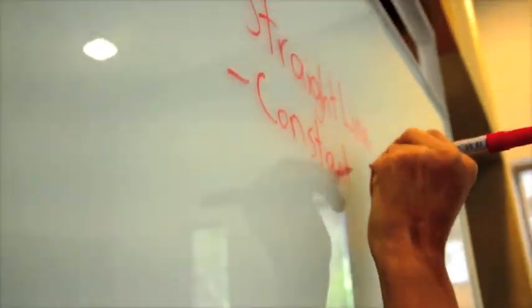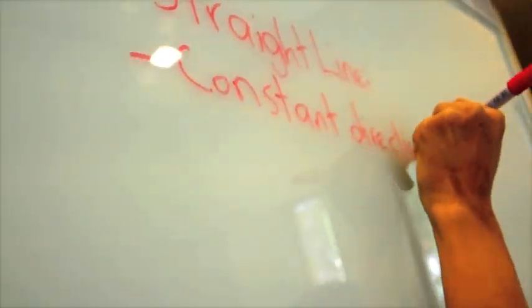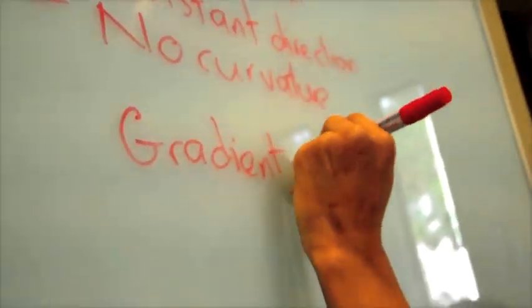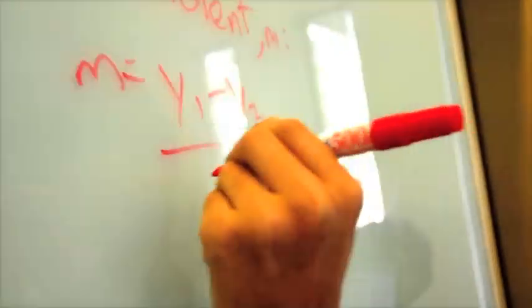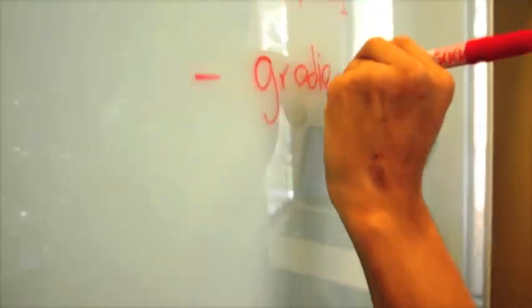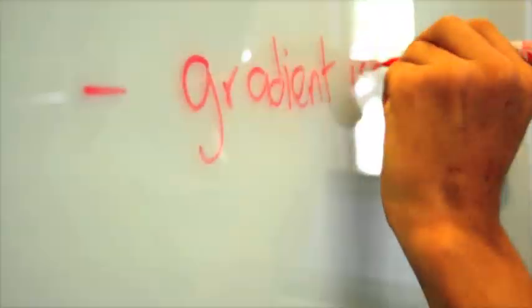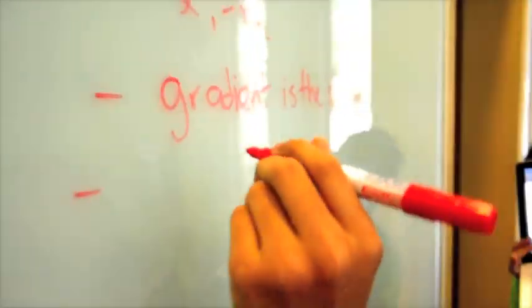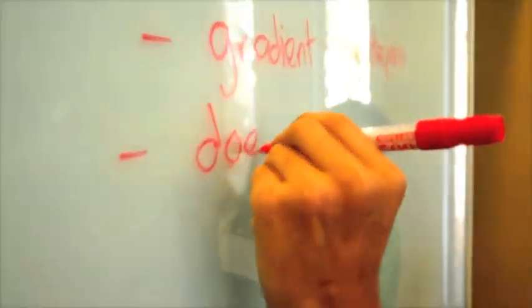Straight line graphs have a constant direction and no curves. Gradient, m, is y1 minus y2 over x1 minus x2. Gradient is the steepness of a line — it doesn't change, and two points are enough.